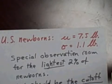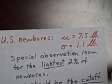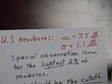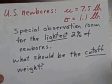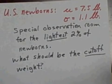So we're going to have a special observation room in which we're going to place the lightest 2% of all newborns. Well, what should the hospital use then for the cutoff weight? Babies that are under what weight should be placed in this observation room? Can we determine what that is? Yes we can.